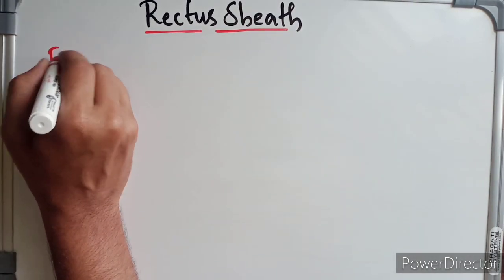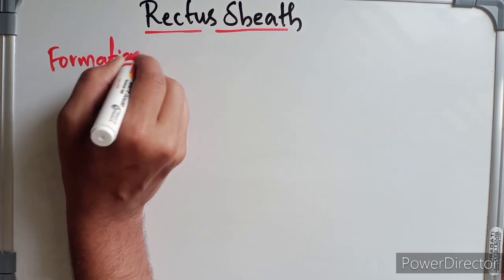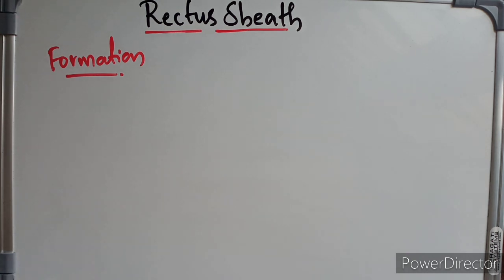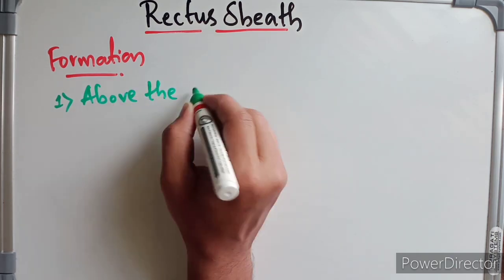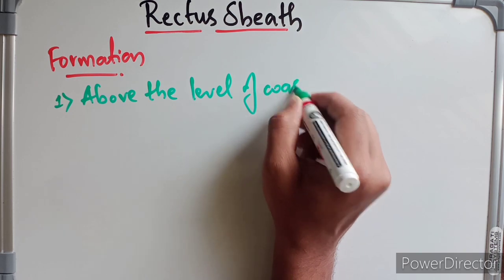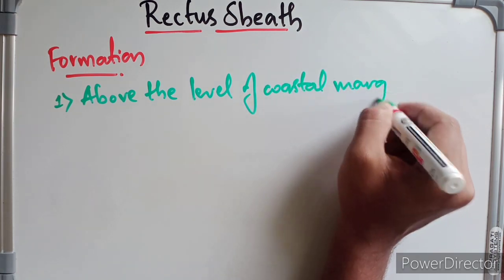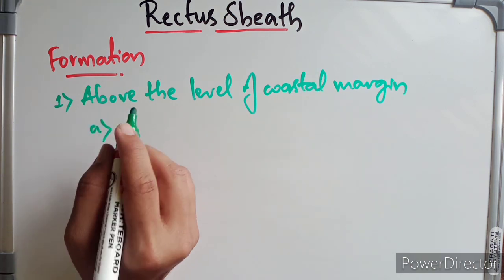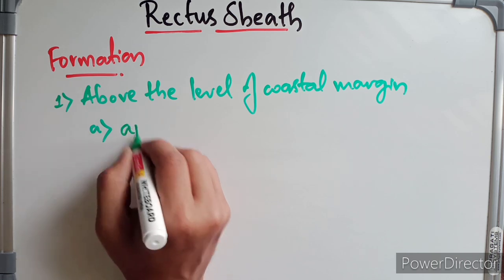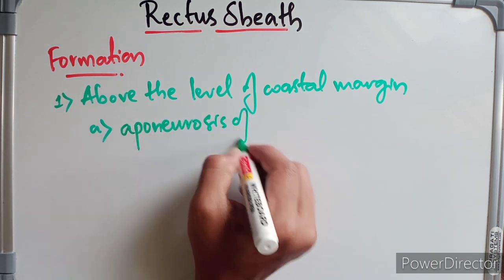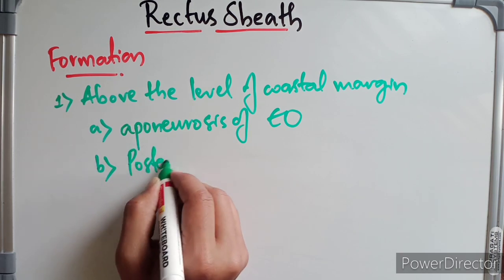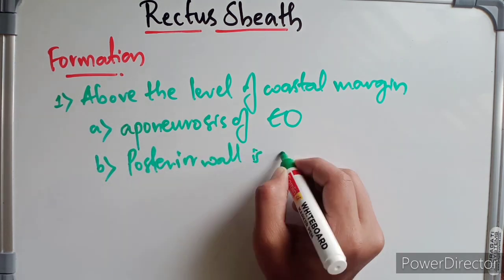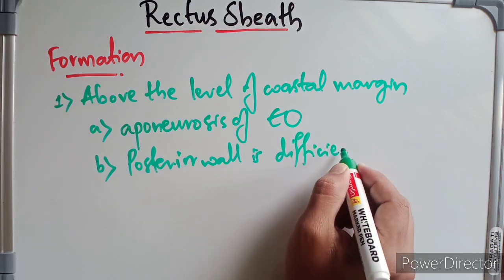Coming to the formation of the rectus sheath. The formation of rectus sheath differs both above and below the level of the costal margin. First, discussing above the costal margin: the anterior wall is formed by the aponeurosis of the external oblique only, and the posterior wall is deficient.